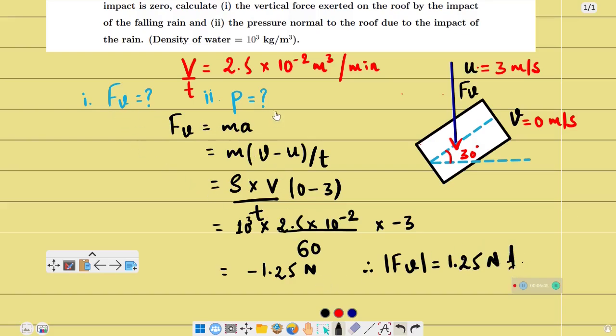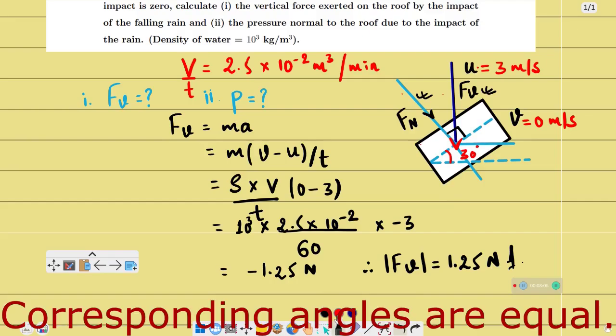This is the vertical force. Now for pressure normal to the roof. The normal force is perpendicular to the plane at 90 degrees. This is the vertical force, and this is normal to the plane. Since this is horizontal and parallel, and the angle is 30 degrees here, this angle is 30 degrees.